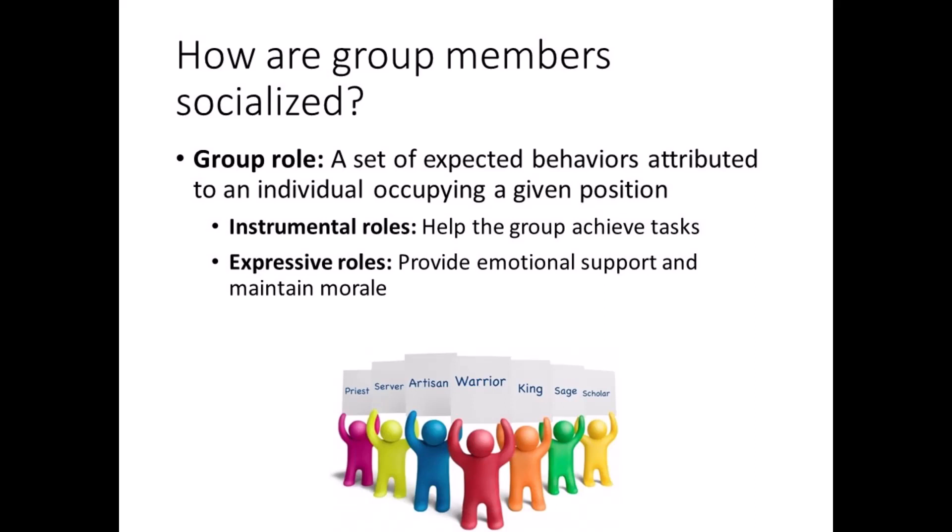These expectations can be formal or informal. Examples of formal roles in academia include professor, student, department chair, and dean. Examples of informal roles include the friend that plays the mediator when a conflict arises, or the colleague that doesn't mind stepping in when someone is absent. One way to categorize roles is according to their function. Instrumental roles help the group achieve tasks — they get things done. Without these positions, the group would not be able to reach its goals. The coaches and players are instrumental to a sports team's success, for example.